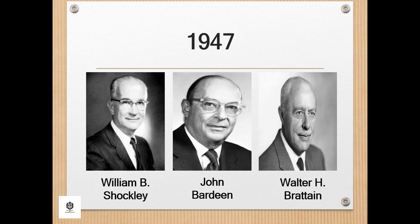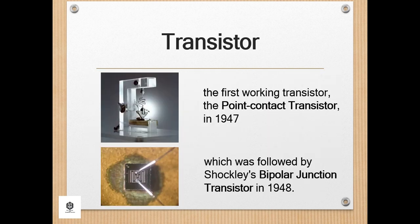During 1947, William Shockley, John Bardeen, and Walter Brattain of Bell Laboratories invented the transistor. They discovered how to make an electric switch with solid materials and no need for a vacuum. The concept of a field-effect transistor had been proposed by Julius Edgar Lilienfeld in 1925. Bardeen and Brattain, working under Shockley at Bell Labs, built the first working transistor — the Point-Contact Transistor in 1947 — followed by Shockley's Bipolar Junction Transistor in 1948. From 1955 onwards, transistors replaced vacuum tubes in computer designs, giving rise to the second generation of computers.